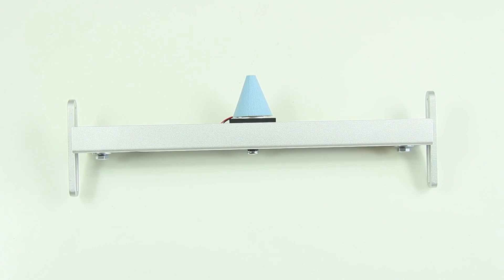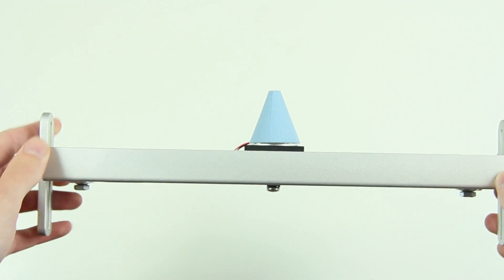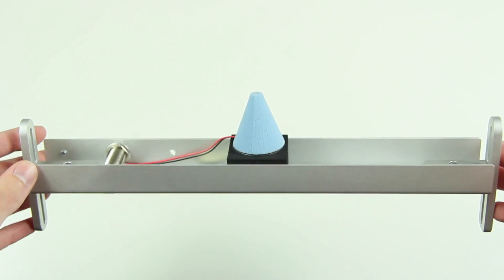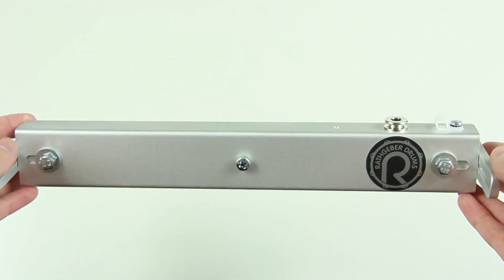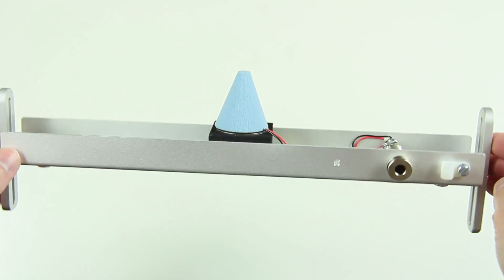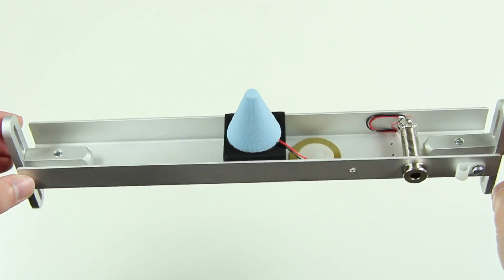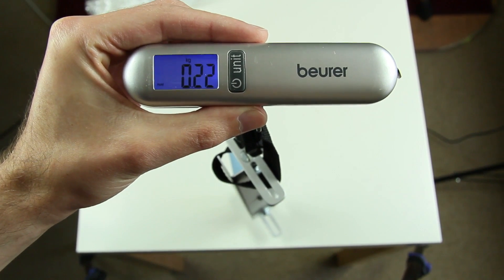This dual trigger bar is made for a 14-inch shell, but available in all sizes. It has a rim piezo and a trigger cone placed in the middle to enable positional sensing. Its surface is craned. The weight of it is only 220 grams.